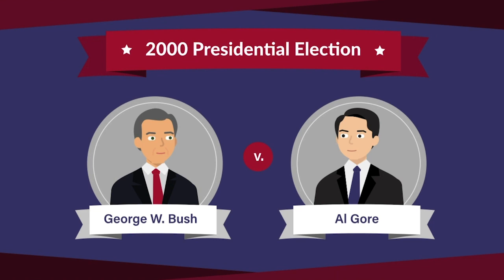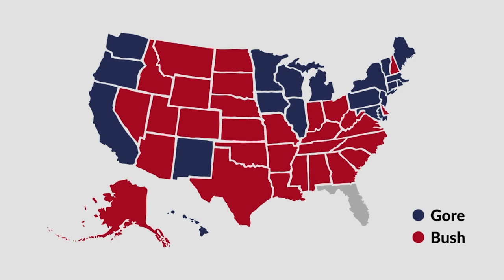Voting in the 2000 presidential race between Vice President Al Gore and Governor George W. Bush took place on November 7, 2000. As of November 8, 2000, the results for all states except Florida had been determined.